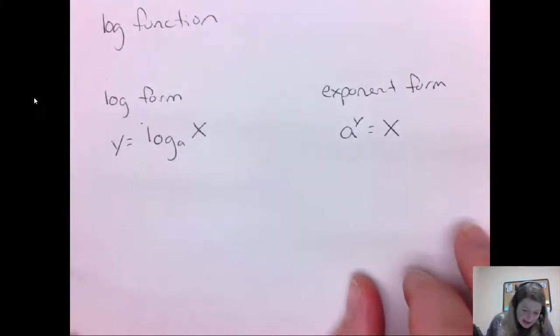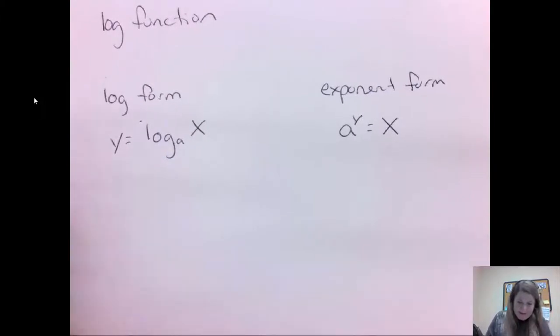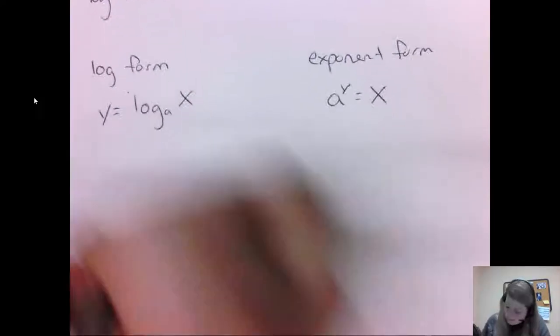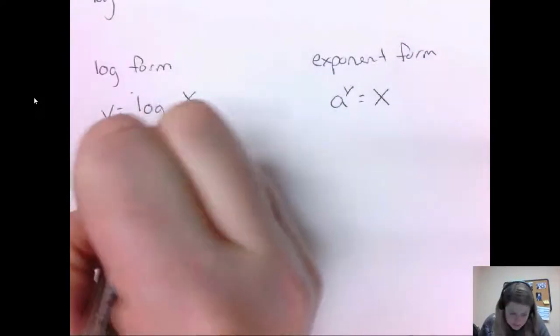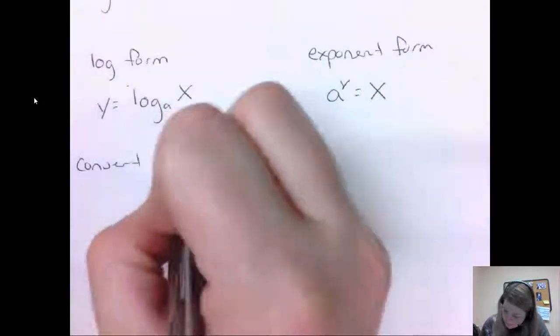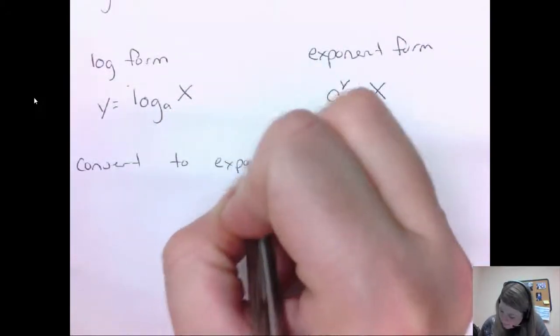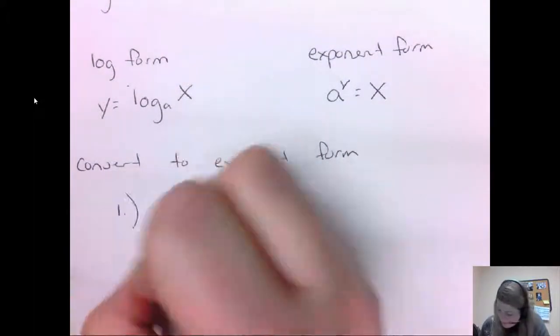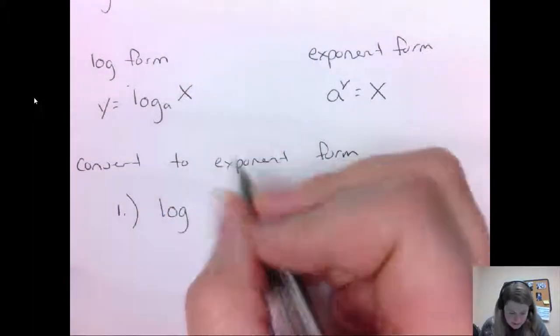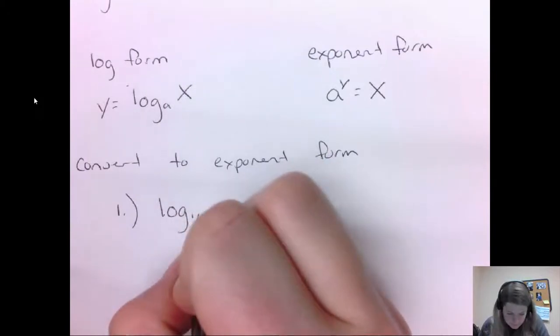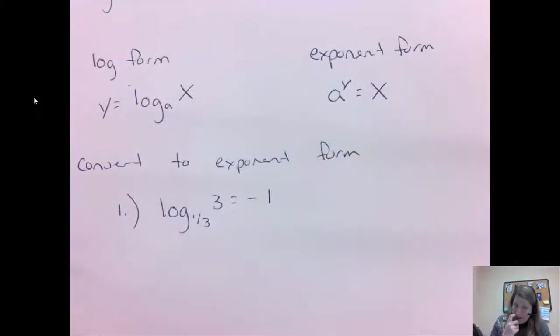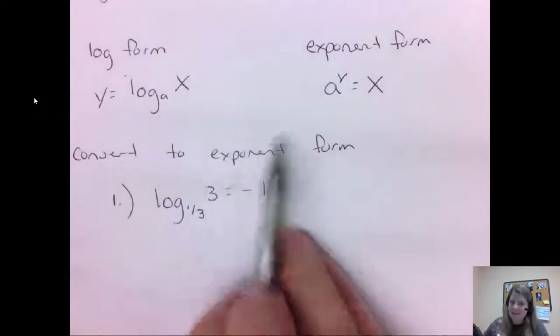We will go between these two formulas, going between log form and exponent form. So let's look at a couple. We're going to convert to exponent form. So here's my first example. What if I have log base one third of 3 equals negative 1? How can I convert that to exponent form? Well, let's see here.